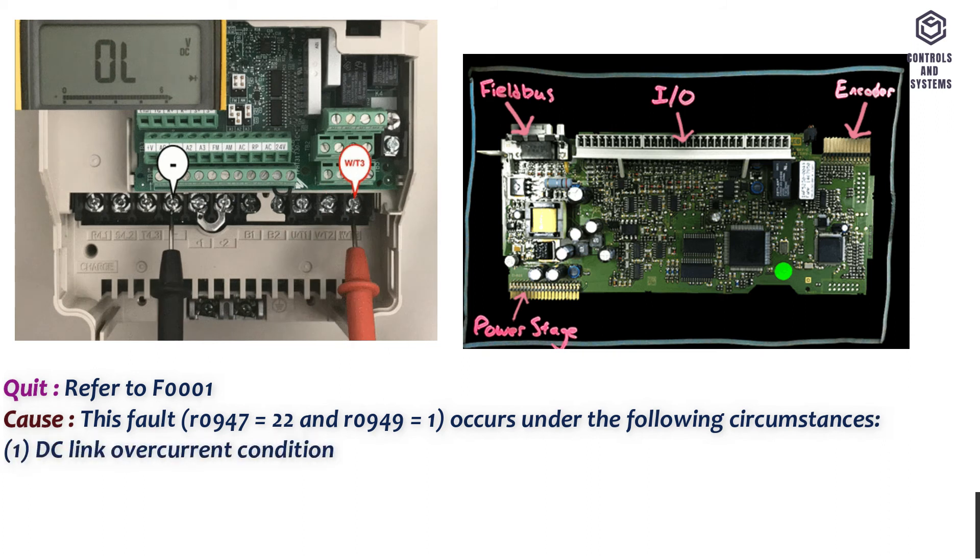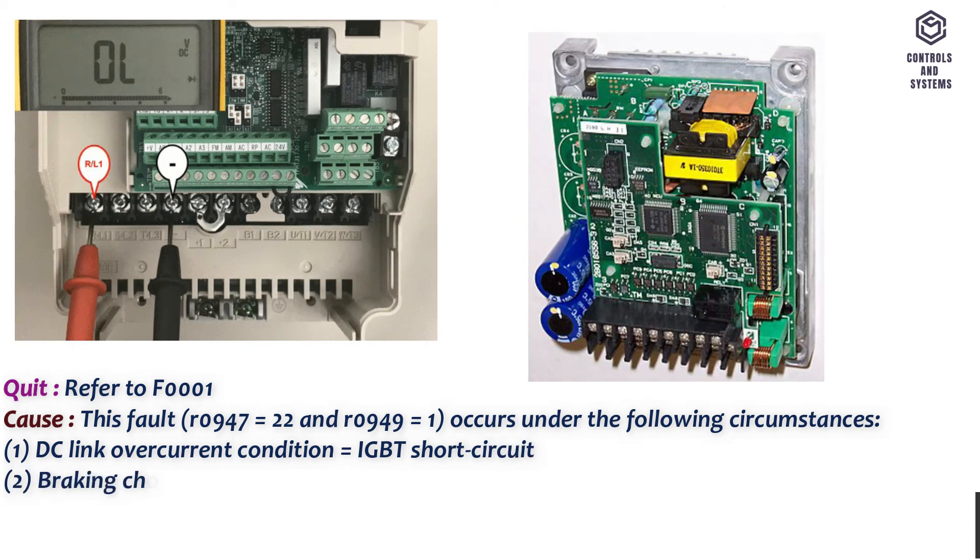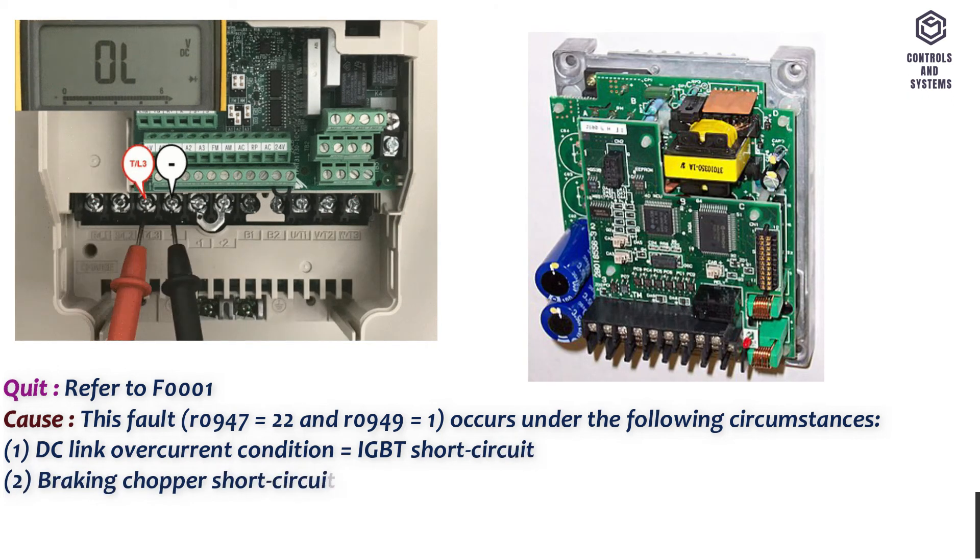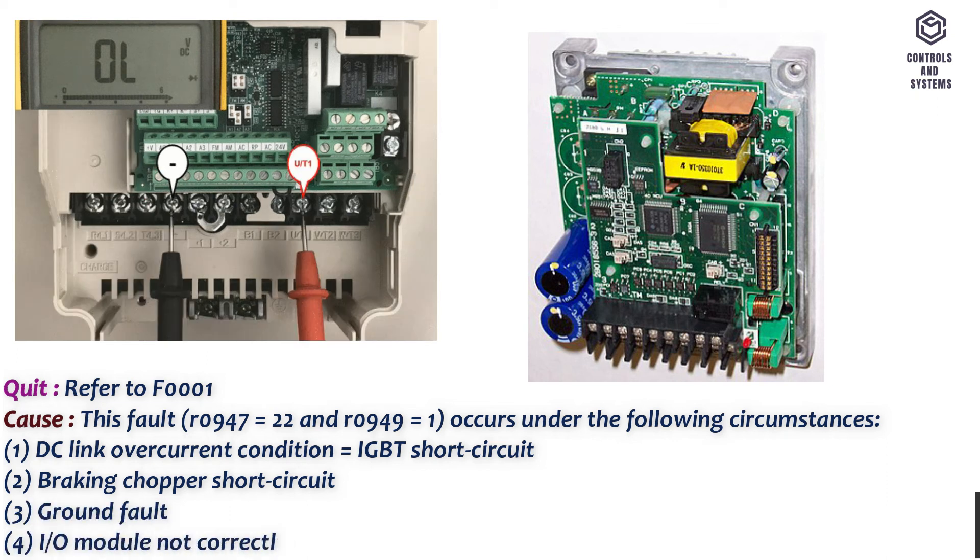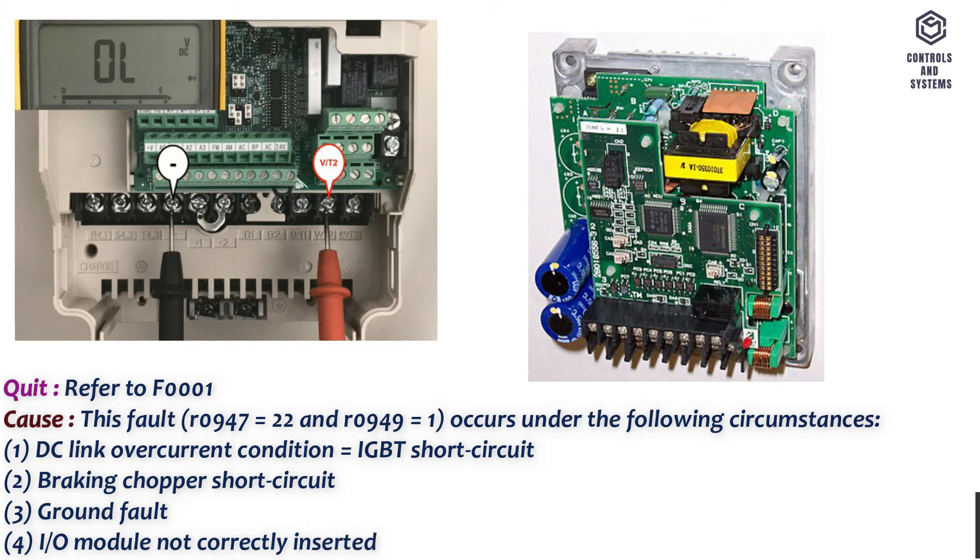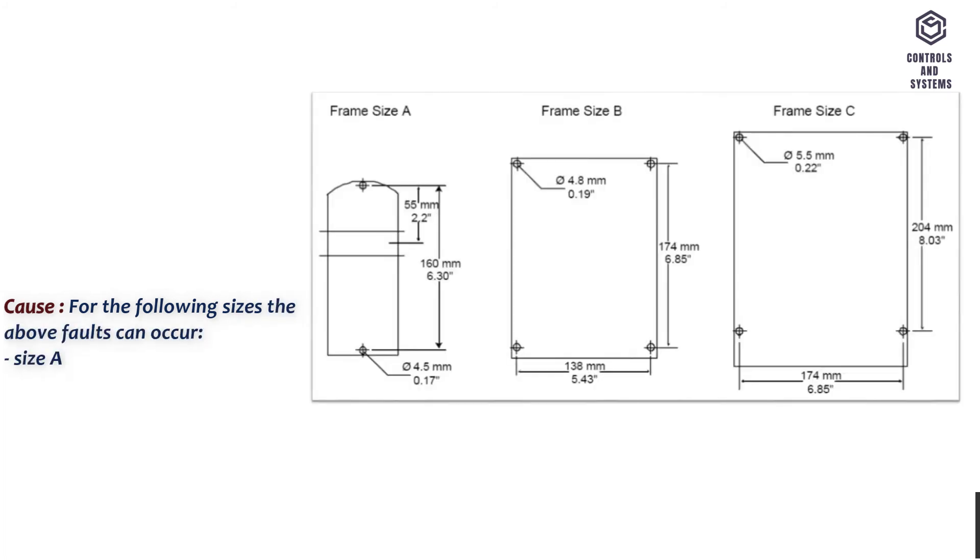1. DC link overcurrent condition equals IGBT short circuit. 2. Braking chopper short circuit. 3. Ground fault. 4. IO module not correctly inserted. For the following sizes the above faults can occur: Size A to C: 1, 2, 3, 4.